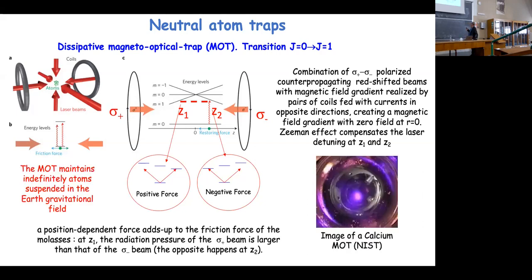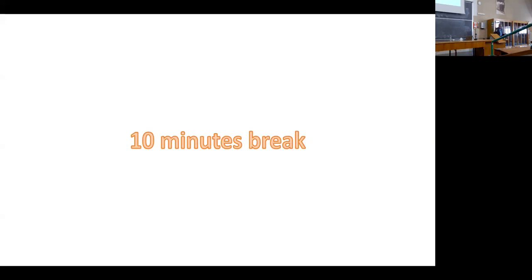In this picture you can see the bright fluorescent spot from calcium atoms trapped in a MOT — about hundreds of millions to one billion atoms trapped at the intersection of the laser beams. I will stop here, and in the second part of the talk I will describe what kind of interesting experiments can be done with these cooled and trapped atoms. We will resume in 10 minutes.